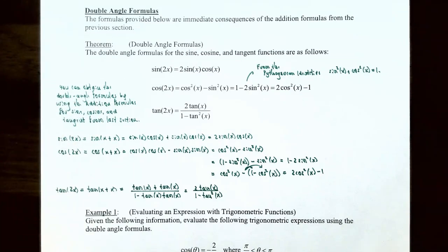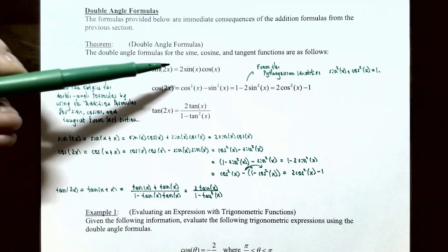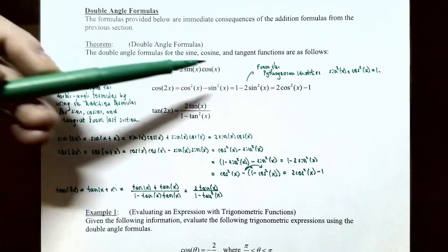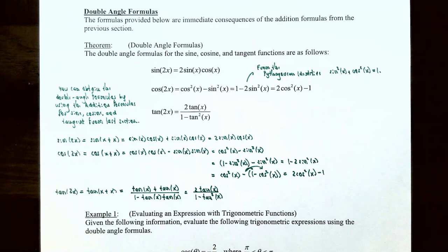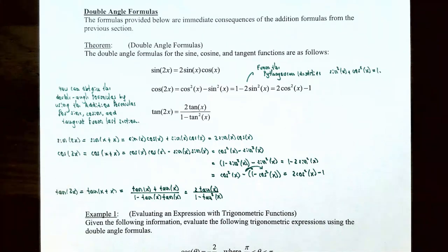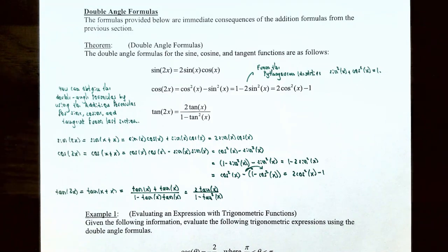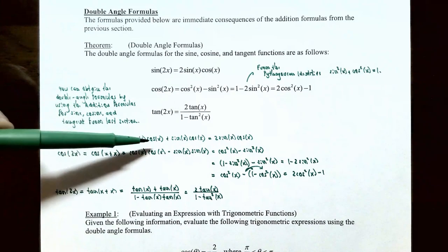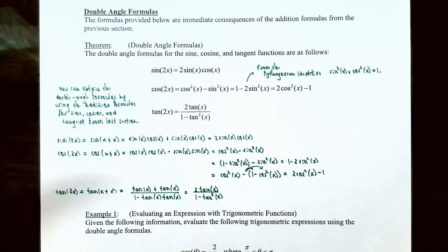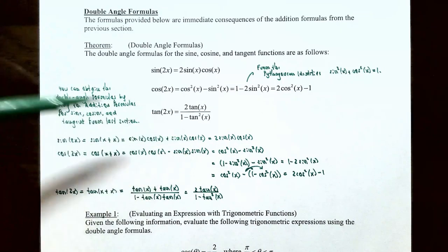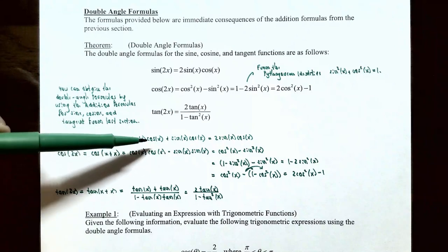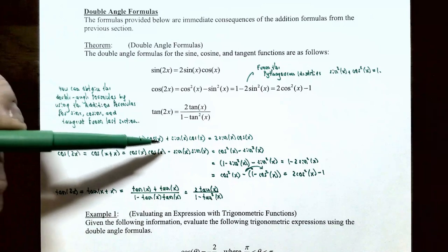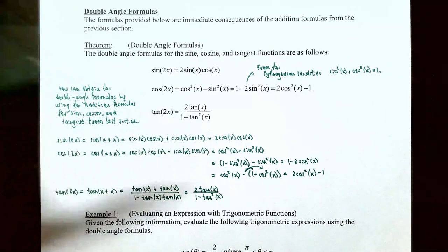Notice why it's called the double angle formula for the sine function: instead of sine of x you have sine of 2 times x, equal to 2 times sine of x times cosine of x. You obtain this by using the addition formula: sine of 2x equals sine of x plus x, which gives sine x cosine x plus sine x cosine x, yielding 2 sine x cosine x.